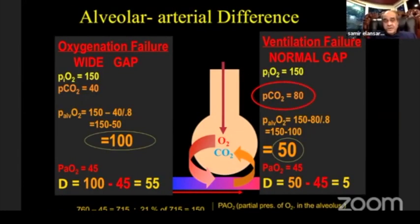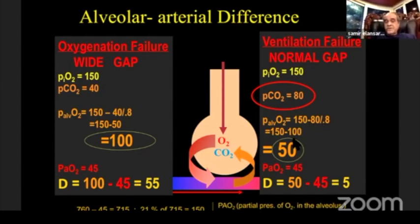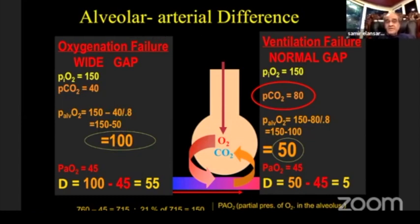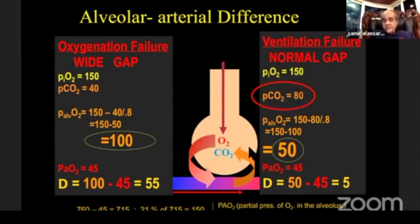From the alveolar-arterial oxygen difference equation, I can judge the cause of respiratory failure — whether it is ventilatory failure or oxygenation failure as in ARDS. Suppose a patient comes with CO2 of 80 mmHg — the alveolar oxygen pressure is 150 minus 80 divided by the respiratory quotient, equaling about 50 mmHg. The A-a difference would be 50 minus 45 equals 5, which is normal. But if the difference is high, it is an oxygenation failure. An A-a difference greater than 10 in young adults or greater than 20 in older patients indicates oxygenation failure, not ventilatory failure.